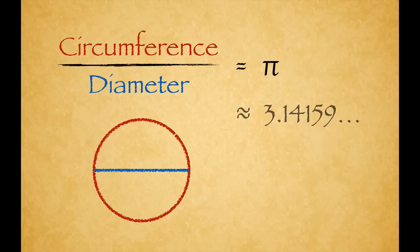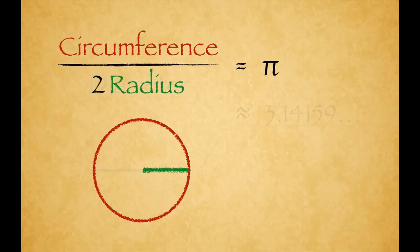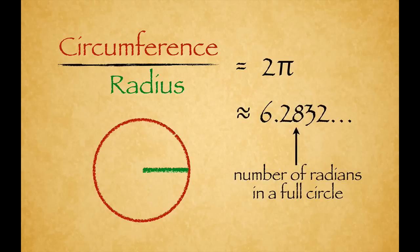The diameter is twice the radius, so you expect the ratio of circumference to radius to be 2π, and 2π is about 6.2832. There you go—the number of radians that fit in a full circle is going to be about 6.3, a little shy of 6.3.